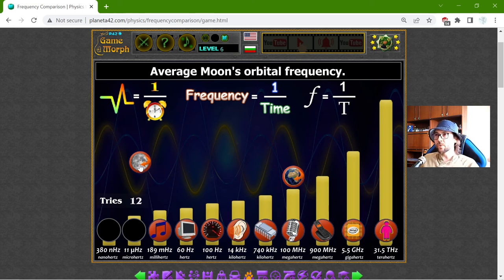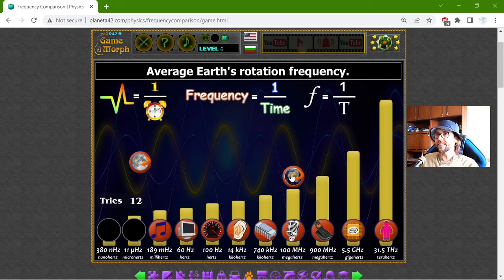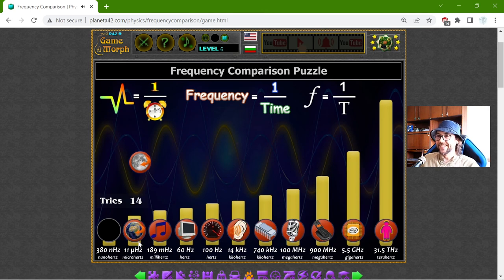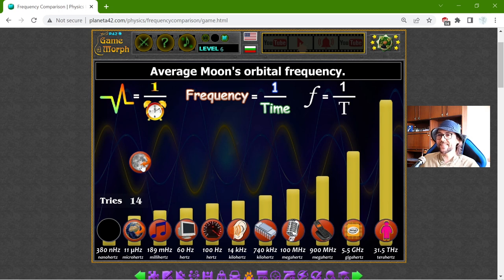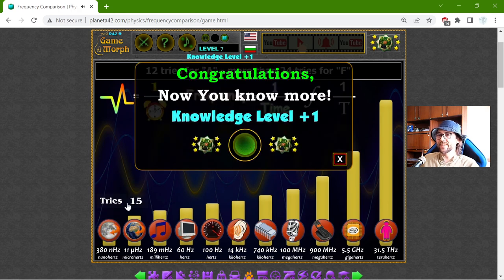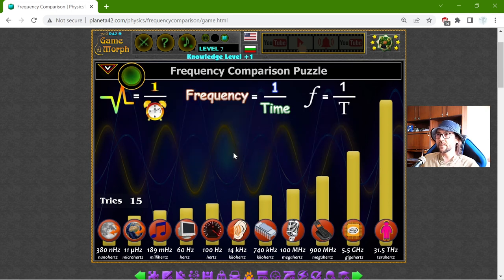The average moon's orbital frequency and the average earth's rotation frequency. Which is smaller? I think this is smaller. No, it's not. So this is 11 microhertz, and the moon is 380 nanohertz. Interesting calculation.